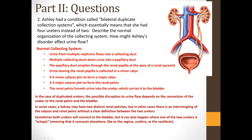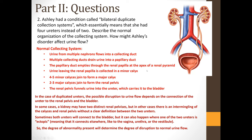Sometimes both ureters connect to the bladder, but it can also happen that one of the two ureters is ectopic — meaning it connects elsewhere, such as to the vagina, the urethra, or the vestibule. The degree of abnormality present will determine the degree of disruption to normal urine flow.